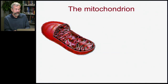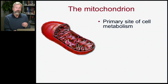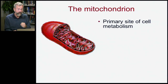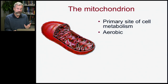The mitochondrion is actually a single cell that is the primary site in the whole cell for metabolism — turning food into energy that the cell can use to run its own engines. The mitochondria is aerobic; it likes oxygen, and the processes it uses for producing energy rely on oxygen.